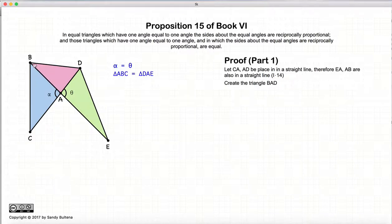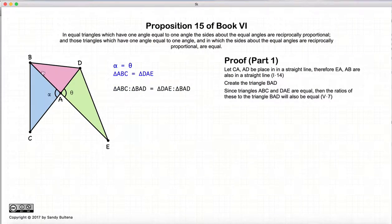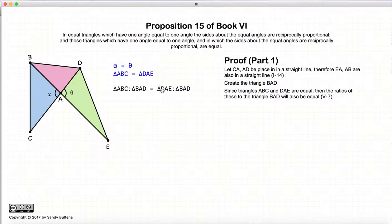We create a new triangle by drawing a line from B to D. Now remember, triangle ABC is equal in area to triangle DAE, and since BAD is common on both sides, we can create — using Proposition 7 of Book 5 — the ratios that ABC to BAD will be equal to DAE to BAD.